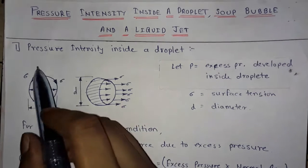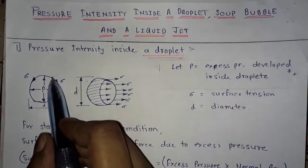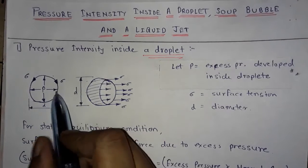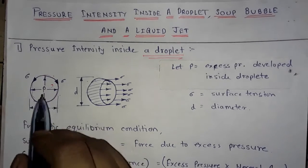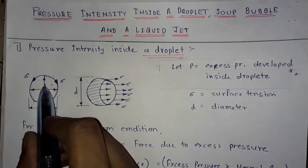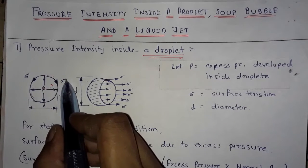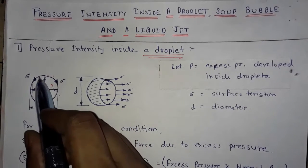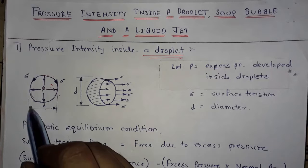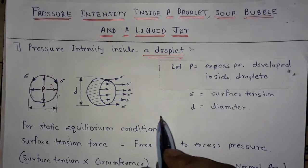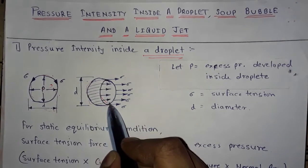Let's start with the pressure intensity inside a liquid droplet. Suppose this is a liquid droplet — this is the circumference of the droplet. Inside that droplet there is an excess pressure developed from all directions, and this is the surface tension on the circumference. This is the diameter of this droplet. Surface tension always occurs on the surface, that is on the circumference of the droplet.